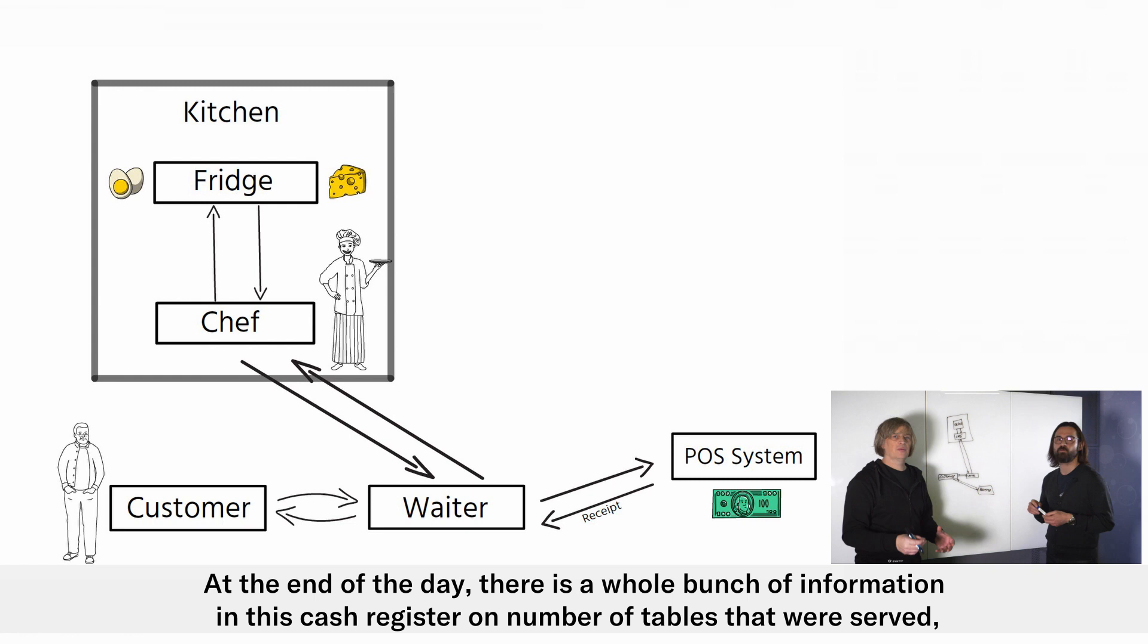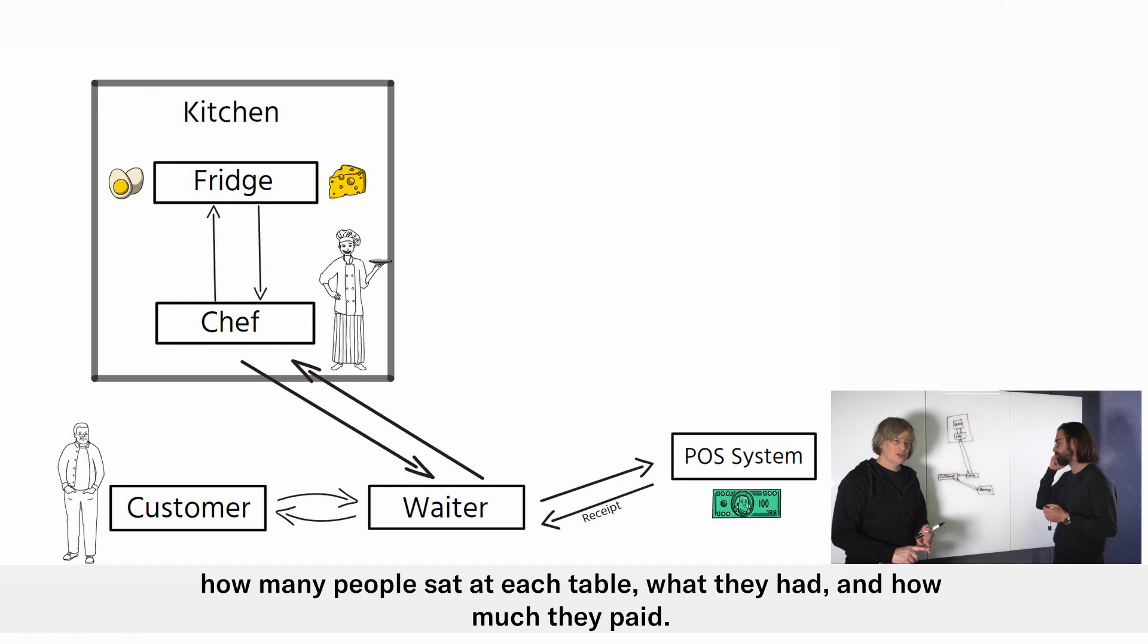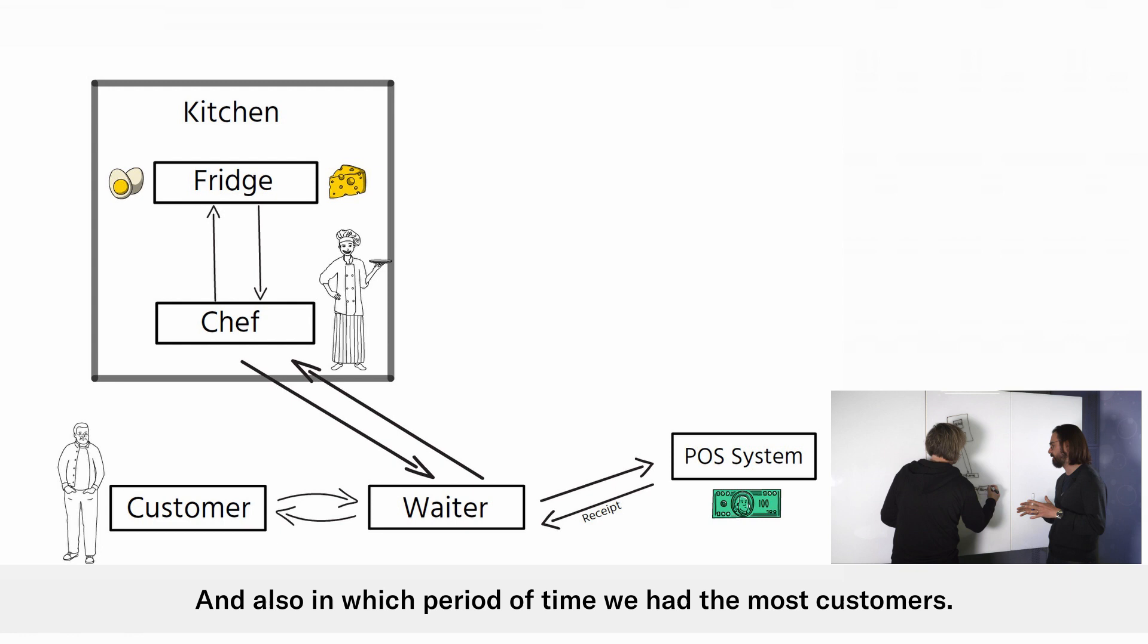Now at the end of the day there's a whole bunch of information in this cash register on number of tables that were served, how many people sat at each table, what they had, how much they paid. And in which period of time we had the most customers.